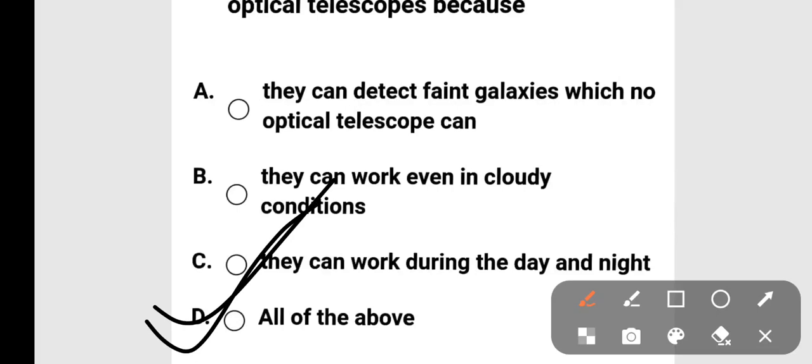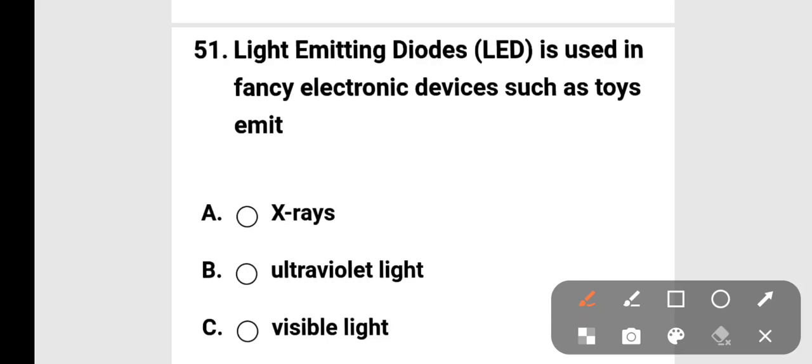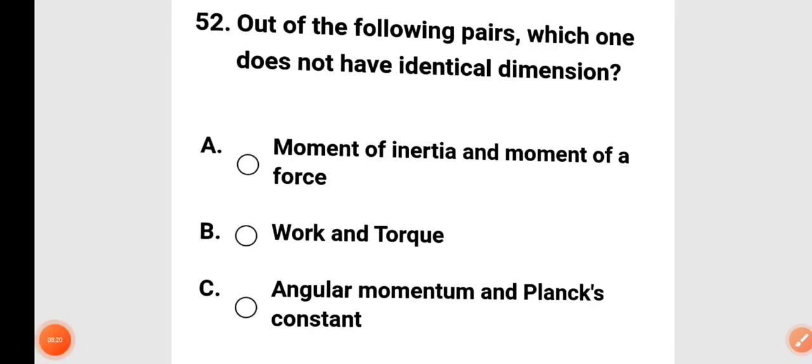Next question: a light emitting diode (LED) is used in fancy electronic devices such as toys. What does it emit — X-rays, ultraviolet light, or visible light? The correct answer is option C: visible light.